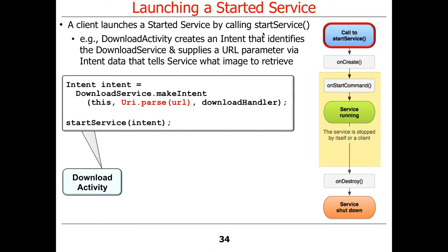We take the URL, parse it as a string, turn it into a URI that gets passed in, and then call startService. The other cool thing about using a factory method is we can make late binding decisions in our design — we can change our mind about how tightly coupled the service is with the activity. The makeIntent might hardcode the intent to a particular class, or it could return an intent that uses implicit binding. That decision can be deferred; we can make changes without breaking anything.